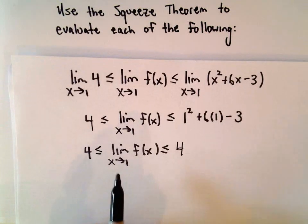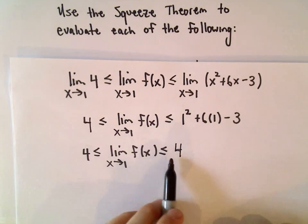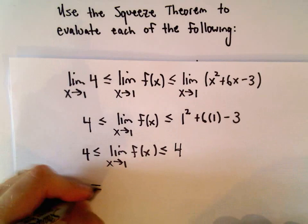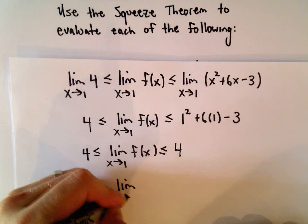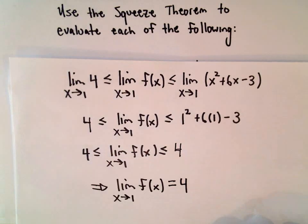Okay, it says the limit as x approaches 1 of f of x has to be greater than or equal to 4, but it also has to be less than or equal to 4. Well, that would imply that the limit as x approaches 1 of our function is simply going to equal the number 4.